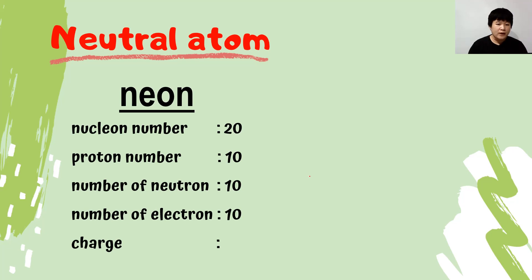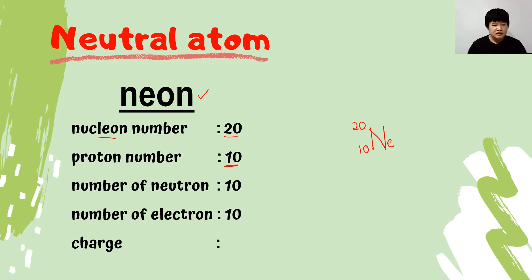Now let's practice writing an isotope notation. The element given is neon, with nucleon number 20, proton number 10, and number of electrons 10. We start with the symbol Ne. On top we write the nucleon number, 20. Below we write the proton number, 10. Since the proton number and electron number are both 10, the charge is zero — so we leave the charge position empty. That is the isotope notation of neon.